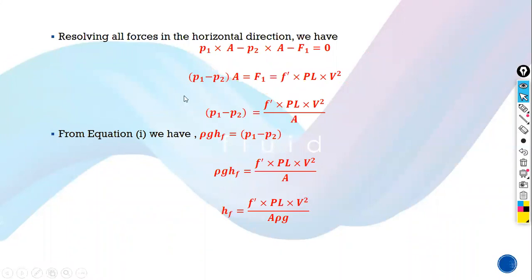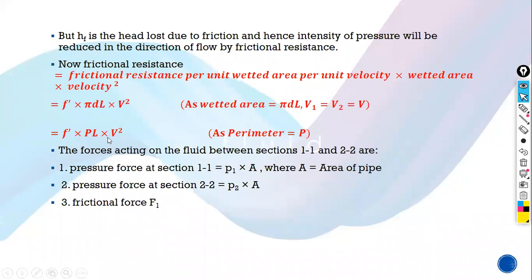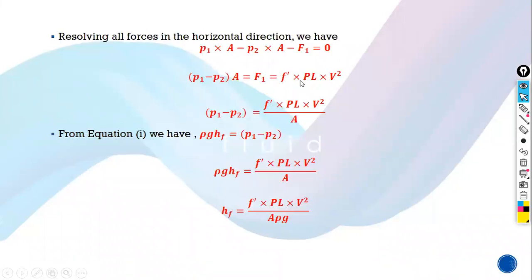Resolving all forces in the x direction: P1A (positive force) minus P2A (in the minus x direction) minus F1 is equal to 0. Taking P1 minus P2 common, we get (P1 minus P2) into A is equal to F1. The value of F1 is F' P L V squared. Substituting and dividing by A, we finally get: P1 minus P2 equals F' P L V squared upon A.